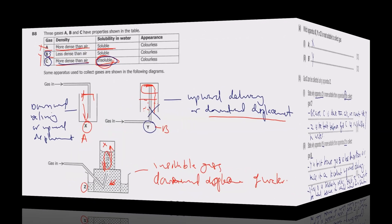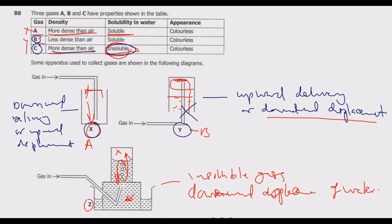Apparatus X is for gases that are denser than common air. What gases are denser than air? We have carbon dioxide, sulfur dioxide, hydrochloric gas, oxygen, and chlorine. These are gases denser than air so any of those gases can be collected using X. So carbon dioxide, sulfur dioxide, hydrochloric gas, oxygen, and chlorine can all be collected using X.